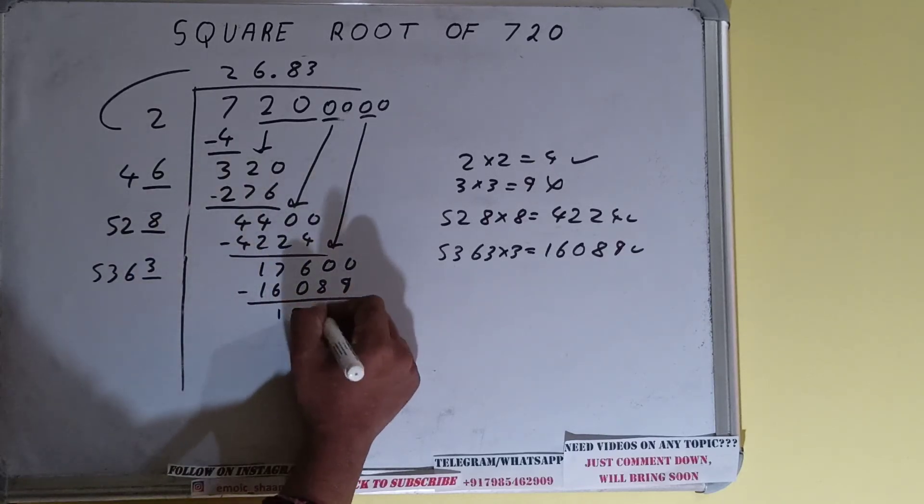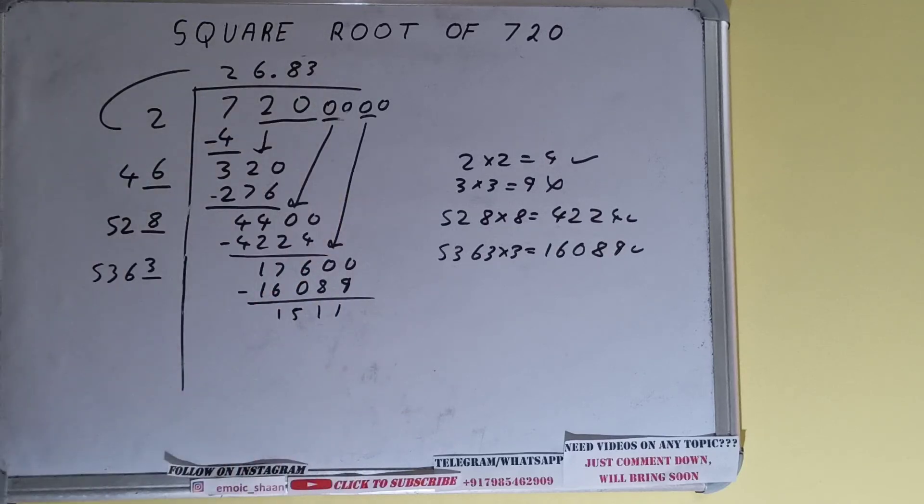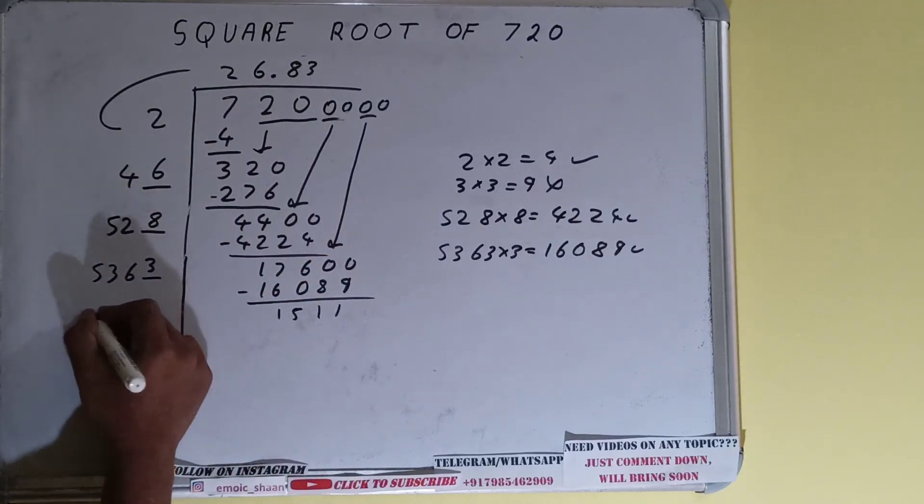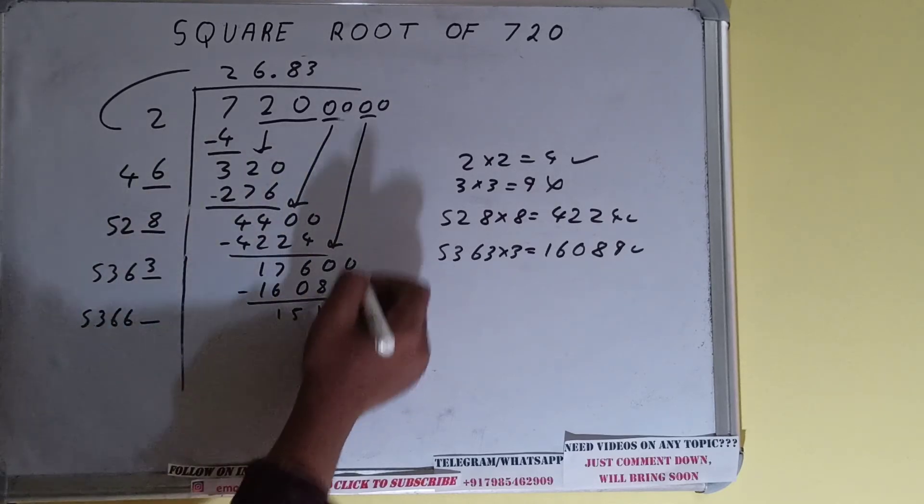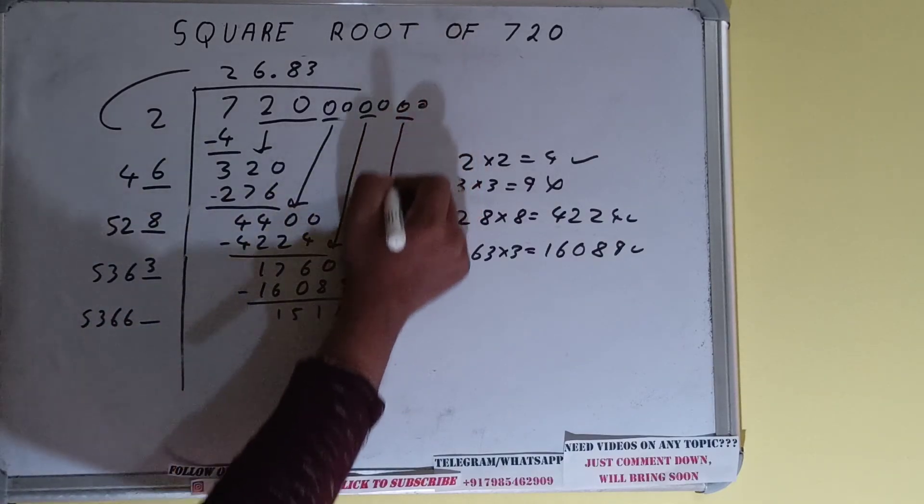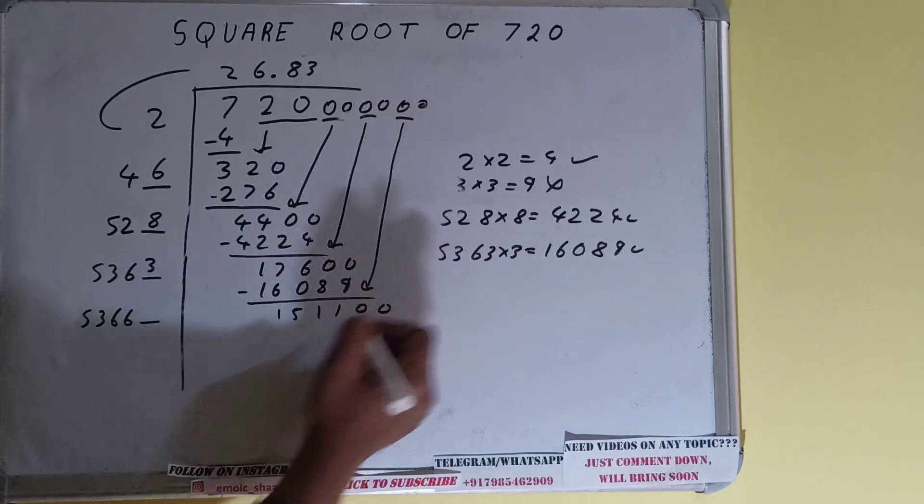And 1511 will be left. Now 5363 into 3 we did, so add both, so 5363 plus 3 will be 5366 and 1 digit extra. And this number we need to make it big, so bring the next pair of zeros down and it will become as 151100.